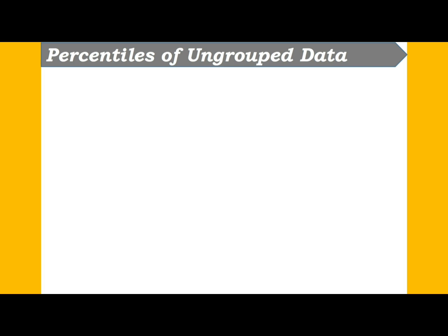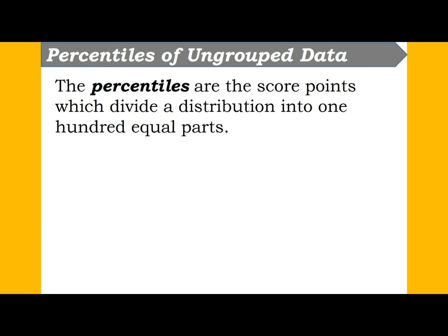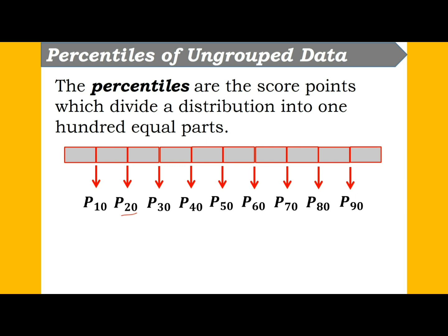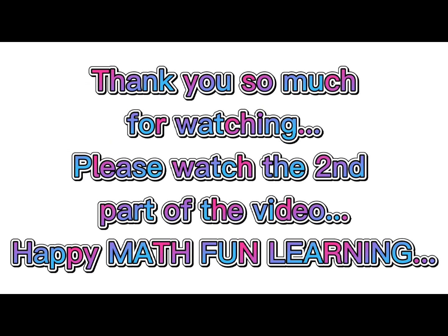Moving on to the percentiles of ungrouped data. Percentiles are the score points which divide a distribution into 100 equal parts: P10, P20, P30, P40, P50, P60, P70, P80, and P90. The median is P50. P50 is equivalent to D5 for deciles and Q2 for quartiles. Thank you so much for watching — please watch the second part of the video. Happy Math Fun Learning!